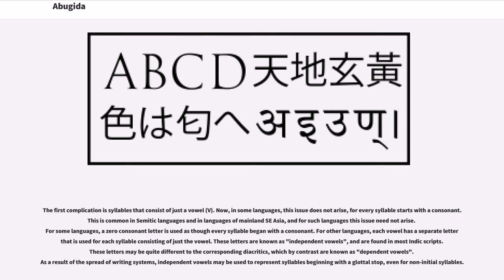The first complication is syllables that consist of just a vowel (V). In some languages this issue does not arise, for every syllable starts with a consonant — common in Semitic languages and languages of mainland Southeast Asia. For other languages, a zero-consonant letter is used as though every syllable began with a consonant. For still others, each vowel has a separate letter used for each syllable consisting of just the vowel, known as independent vowels, found in most Indic scripts, contrasting with dependent vowels. Independent vowels may also represent syllables beginning with a glottal stop.